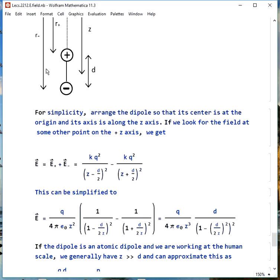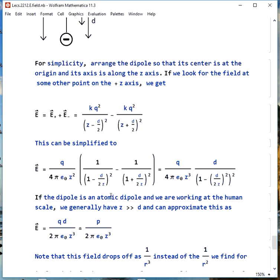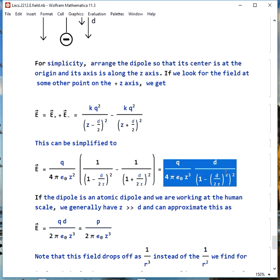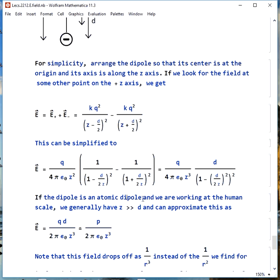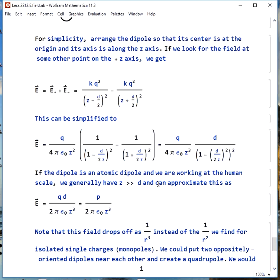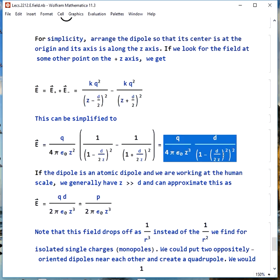We can figure this out by just using vector addition on the fields to see what we'll get. If we arrange it so that the center of the dipole is at the origin and the axis is along the z-axis, we get E is the sum of E plus and E minus. We can simplify this and get this expression, which doesn't look very simple. We can also use an approximation. You might think, why do we do that when we have the exact answer?